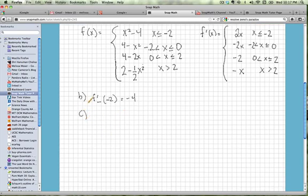For c, they ask us to evaluate f prime from the right evaluated at negative 2. So if we're coming up on negative 2 from the right, we're now dealing with this part of this piece of the function.